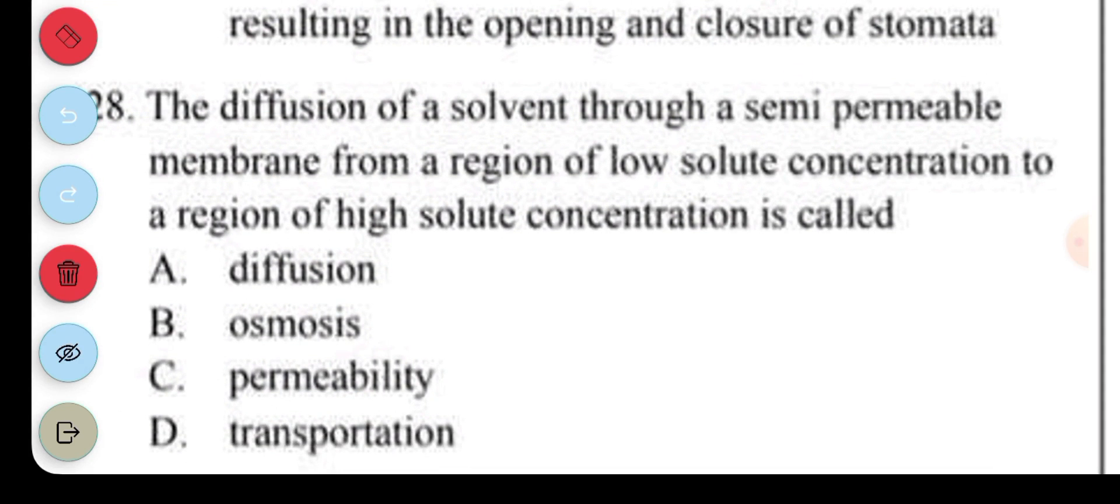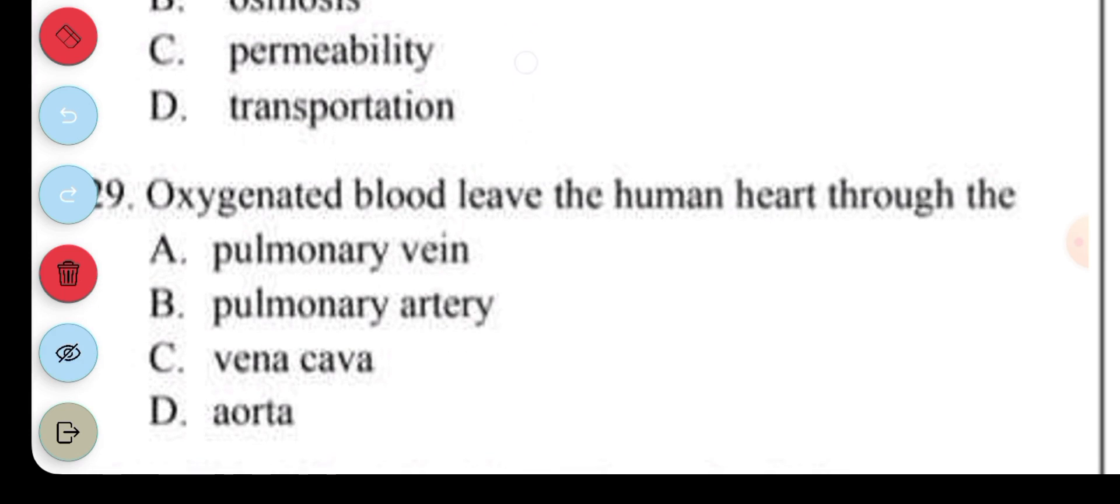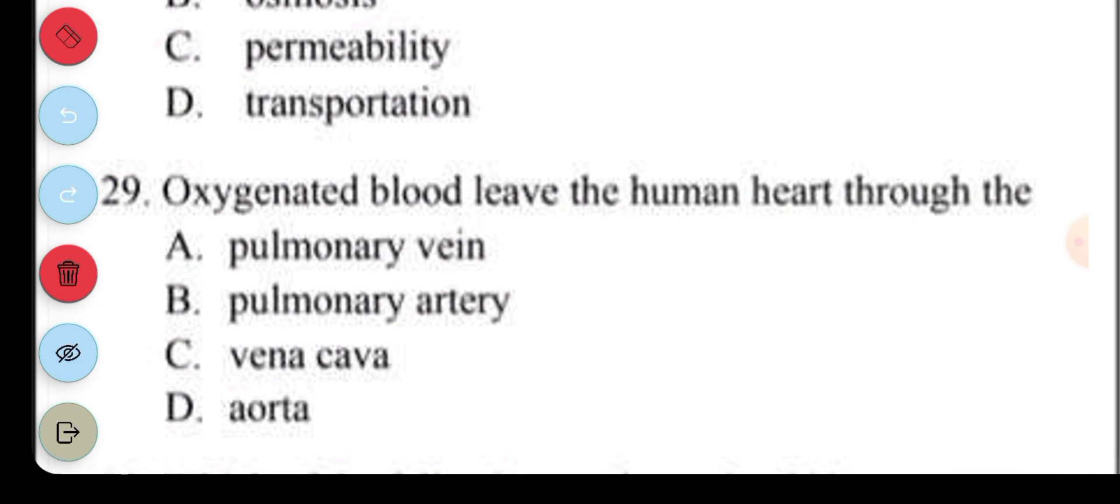Question 28. Diffusion of solvent through a semi-permeable membrane from a region of low solute concentration to a region of high solute concentration is called: A. Diffusion. B. Osmosis. Question 29. Oxygenated blood leaves the heart through the: A. Pulmonary vein. B. Pulmonary artery. C. Vena cava. D. Aorta. The answer to question 29 is D, aorta.